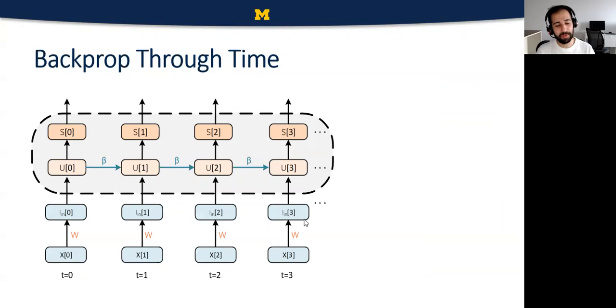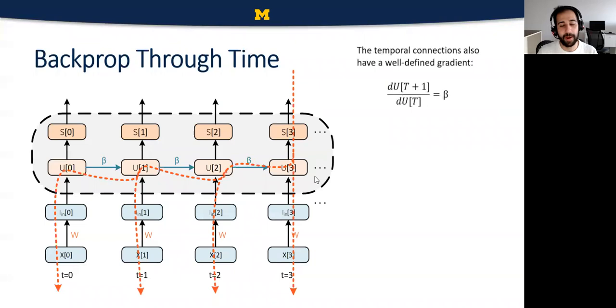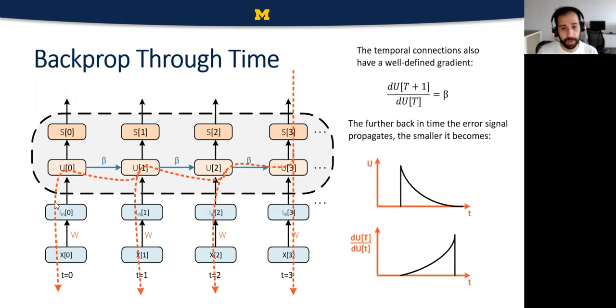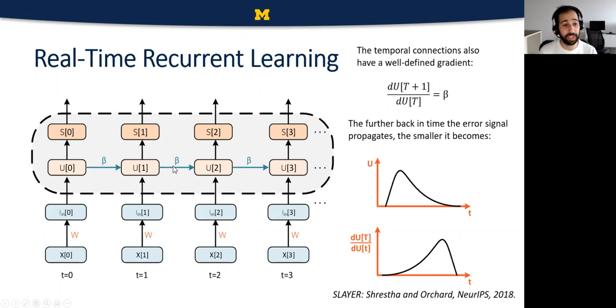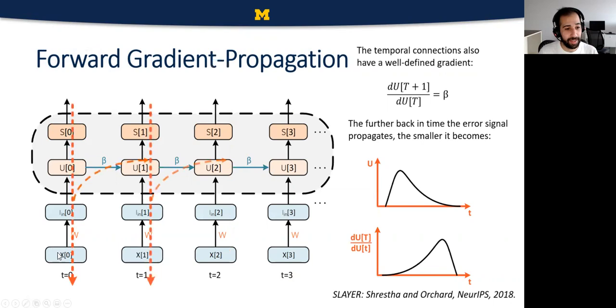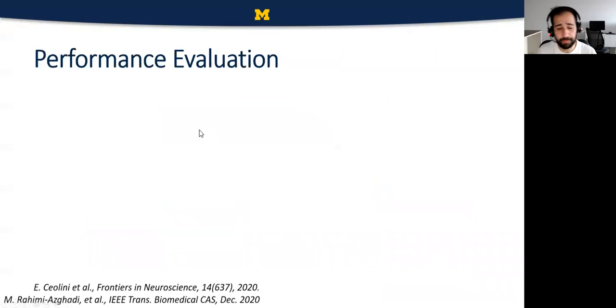We also want to backprop through time. The temporal connections have a well-defined gradient. If I go from U(t+1) to U present time, the derivative is simply beta. So the further back in time you go, the smaller your error signal becomes. Other papers might use kernel-based methods which smooth out that leaky integrate and fire relationship. Another method we've implemented into snnTorch is real-time recurrent learning where you're able to perform weight updates at the same time as your forward propagation as you move forward in time. We've come up with methods that push the gradient forward into future time steps. We get equivalent performance to standard backpropagation just without having to store memory throughout all of time or without having to unroll a computation graph.